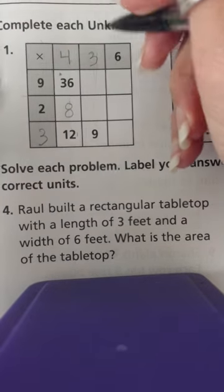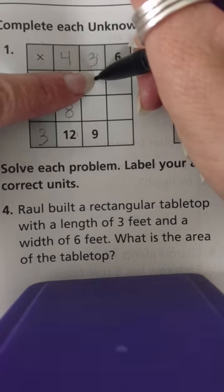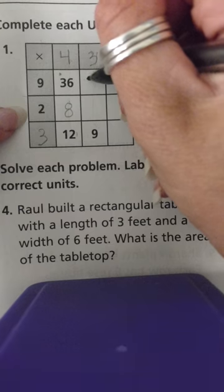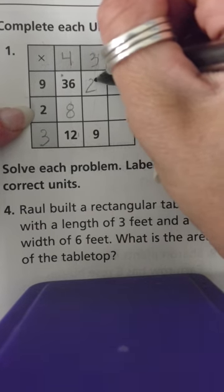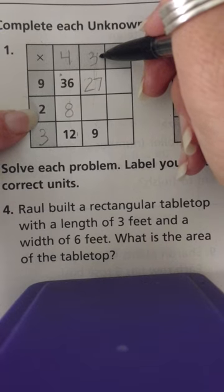Now I can solve the others. So nine times three is equal to twenty-seven, and three times two is equal to six.